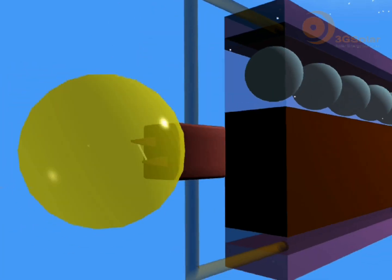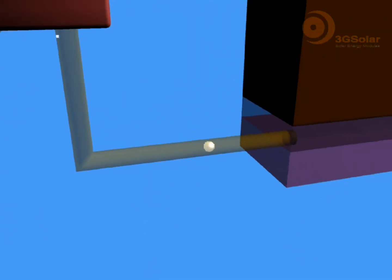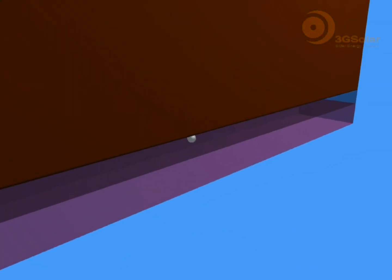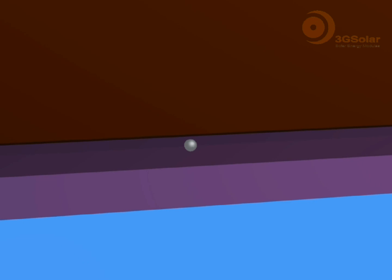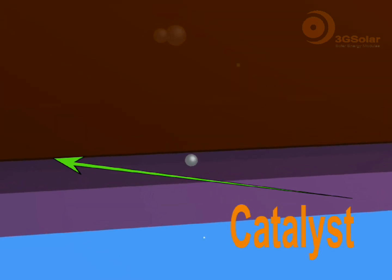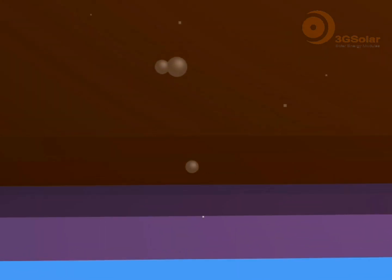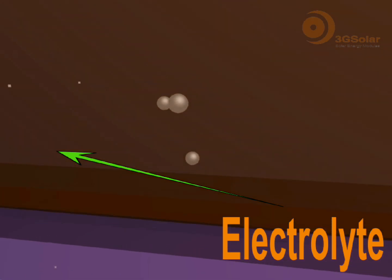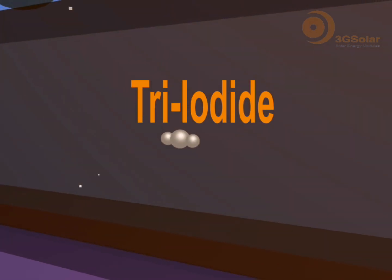The electron does its work and returns to the cell via the bottom conductive layer. With the help of a catalyst layer, the electron enters the electrolyte and interacts with a tri-iodide molecule.